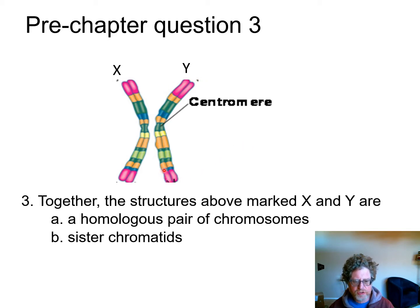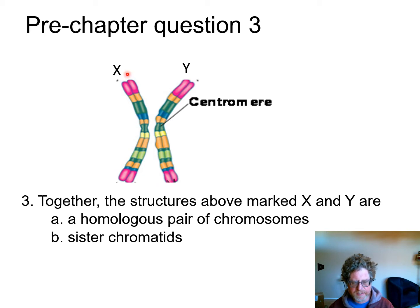Here are two structures labeled X and Y. The structures marked X and Y are a homologous pair of chromosomes — one from mom, one from dad. Each of the homologous pair of chromosomes has twice the normal amount of DNA consisting of sister chromatids. So the answer is: X and Y are a homologous pair of chromosomes.